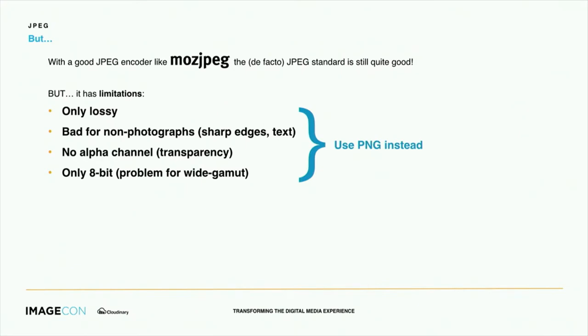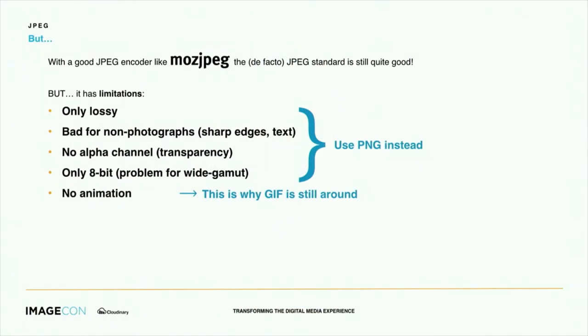In these cases we can use PNG, which can handle up to 16-bit, do lossless, and do alpha transparency. But of course it can only do lossless, so it has its own limitations. JPEG also cannot do animation, which is why we still have the GIF format — other than animation, there is no reason to have GIF around. The entropy coding, the compression density you can get with JPEG, is no longer state-of-the-art, which is hardly surprising after 30 years.